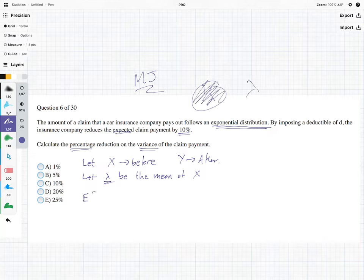Which means the expected value of X is equal to Lambda. And because we're dealing with the exponential distribution, the variance of X is going to be equal to Lambda squared.